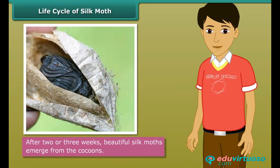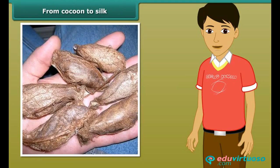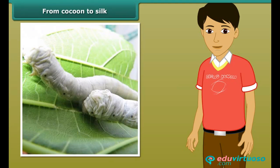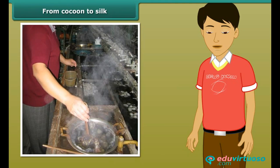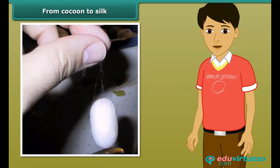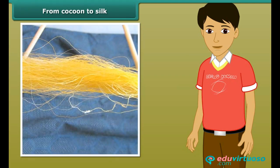Silk is processed from cocoons once the silkworms spin a protective cocoon around themselves. These cocoons are boiled in hot water to separate the silk fiber from the worms. Each cocoon is made of one single silk thread. The trick is to locate one end of the thread — then it is easy to unwind the silk thread from the cocoon.